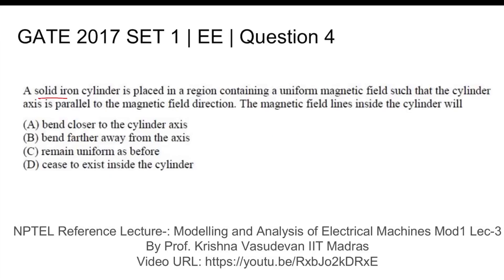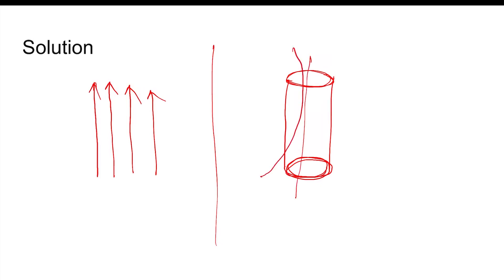Since it is given in the question that it is a solid iron cylinder, before the placement of the iron cylinder if flux lines were like this, after placing the solid iron cylinder whose permeability is much higher than that of air, flux lines will try to bend more towards the axis of the cylinder.